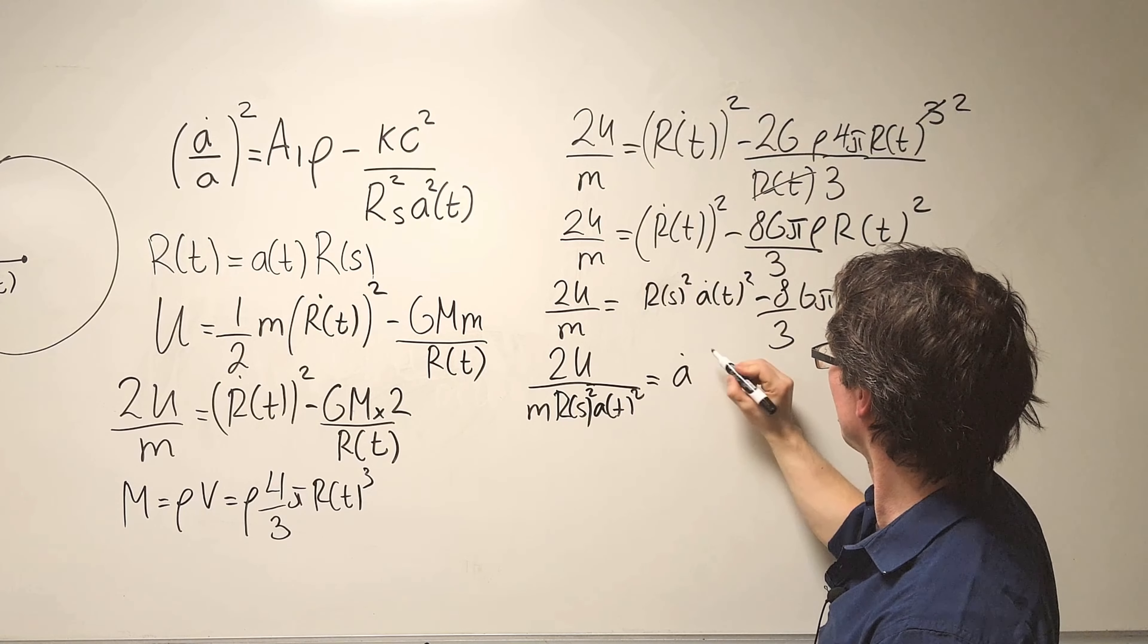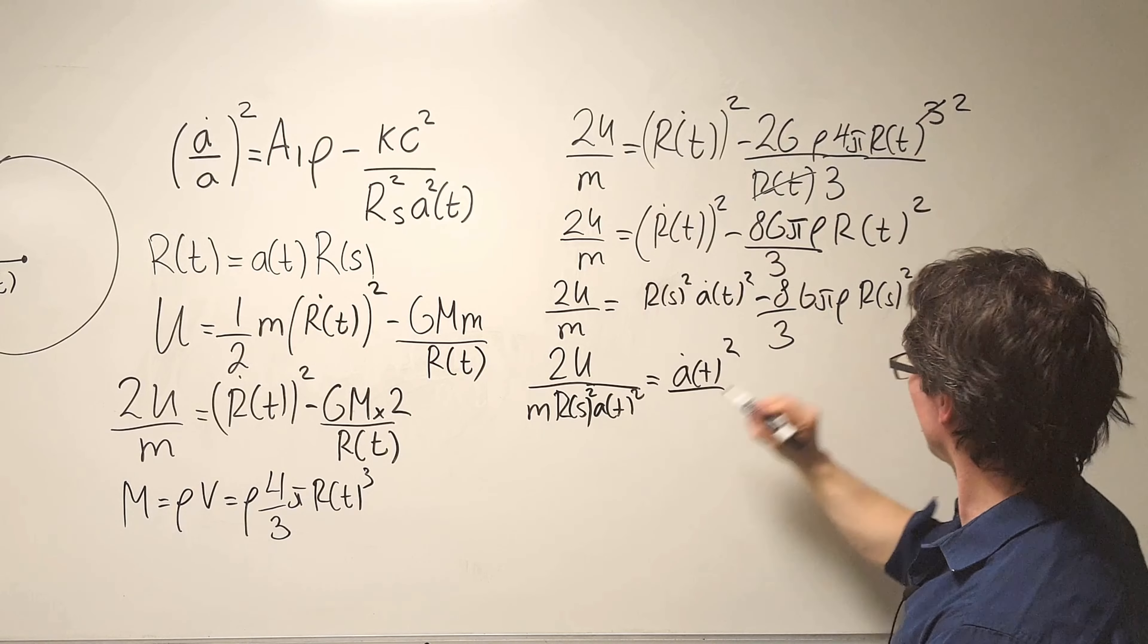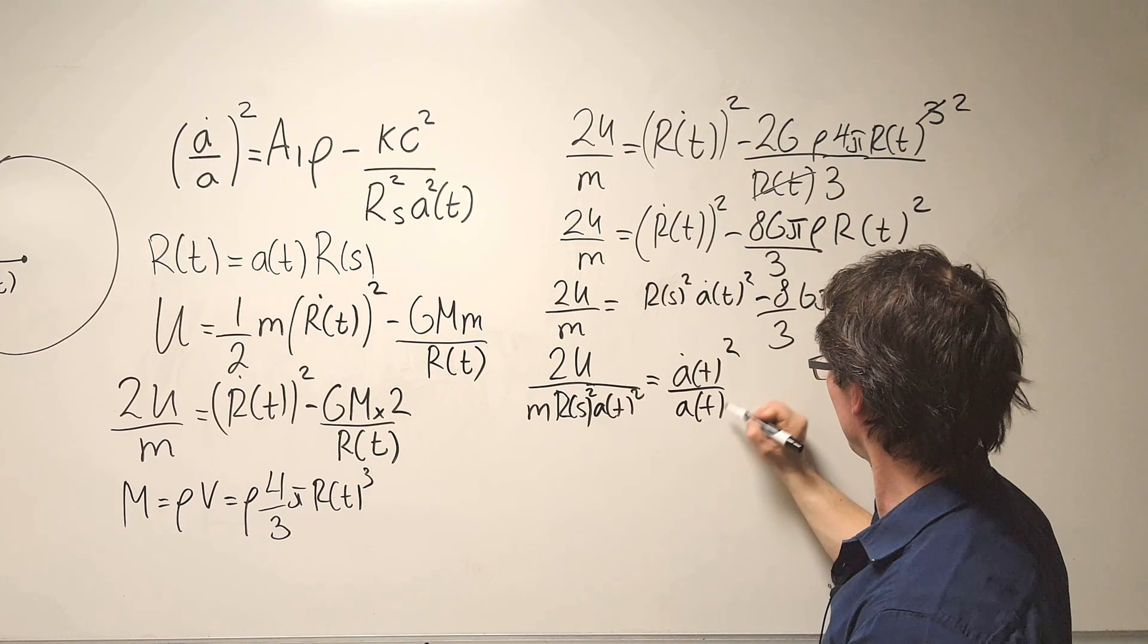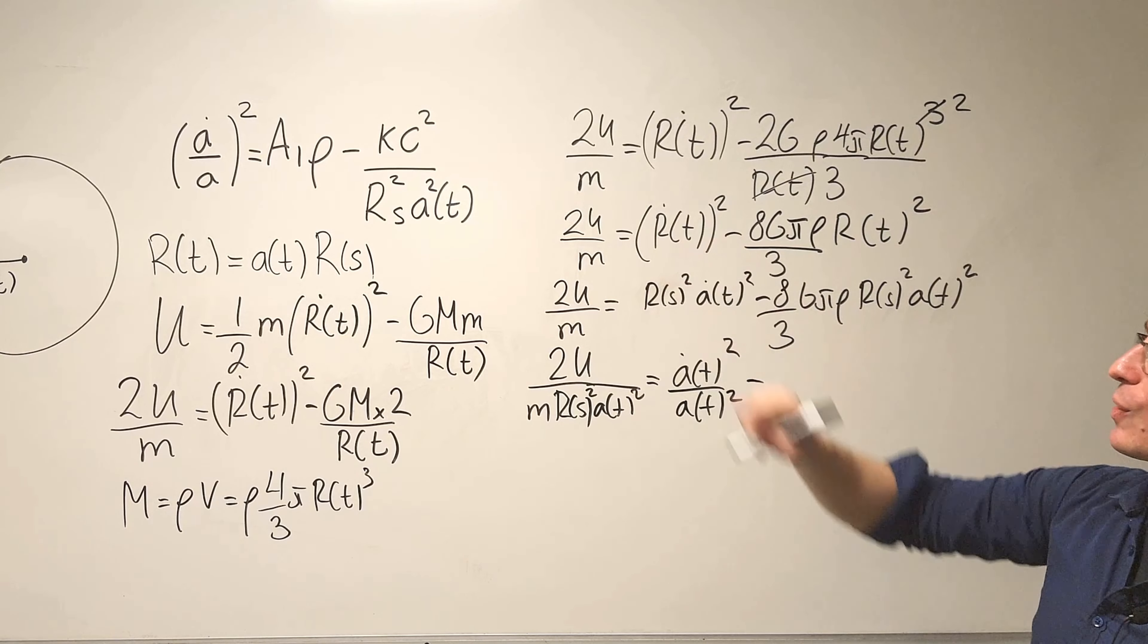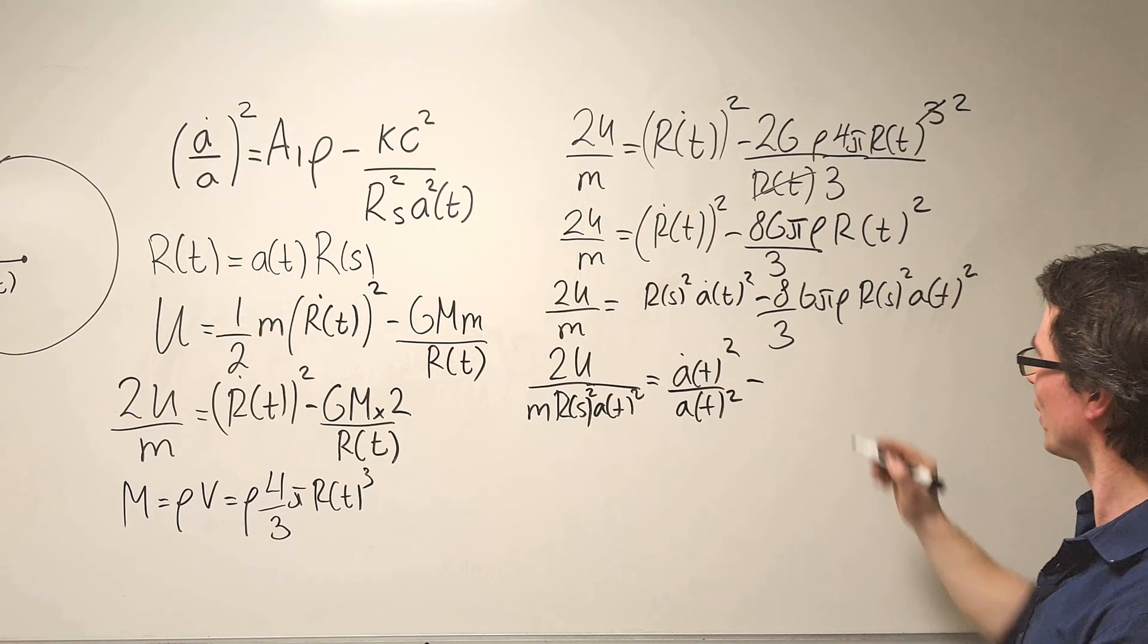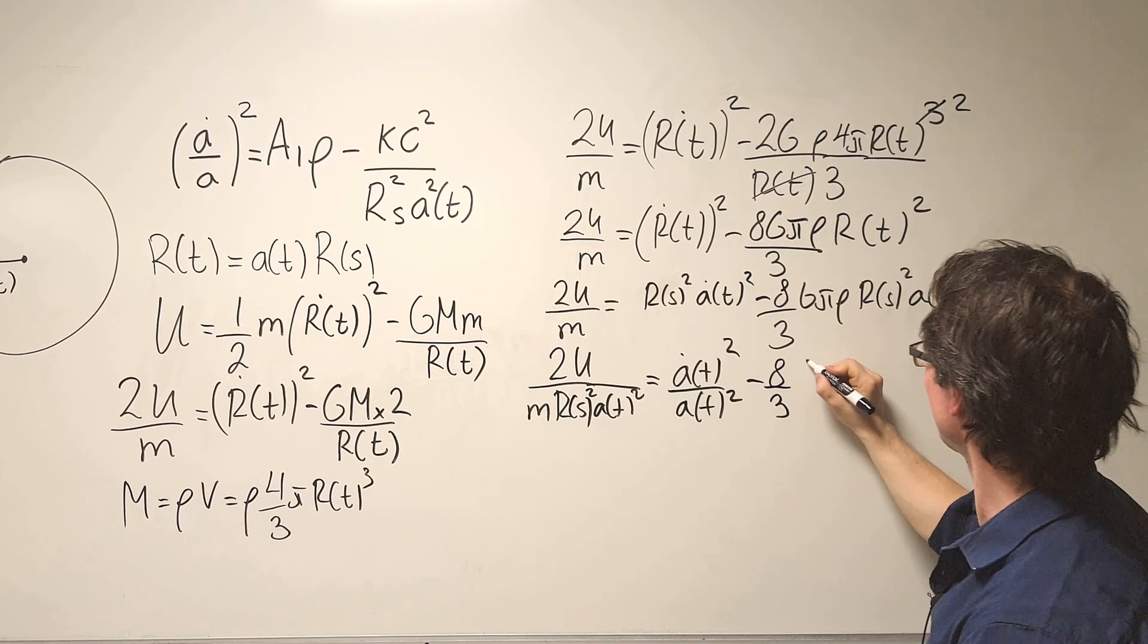Then A(t) squared will be equal to A dot which is a function of t, this expression is squared divided by A as a function of t squared. We're definitely getting there, it's already starting to look like that expression.